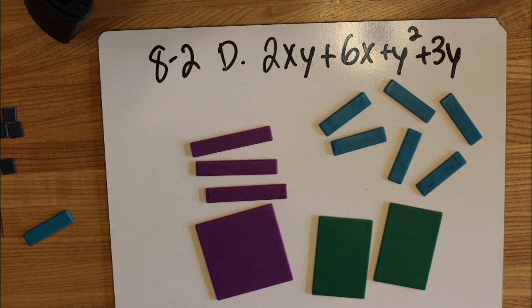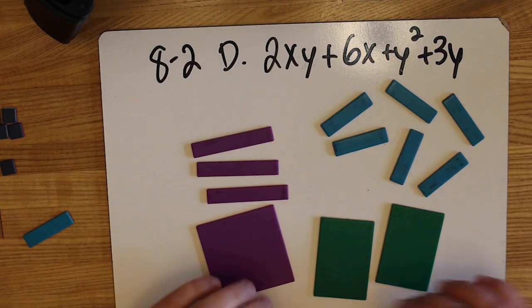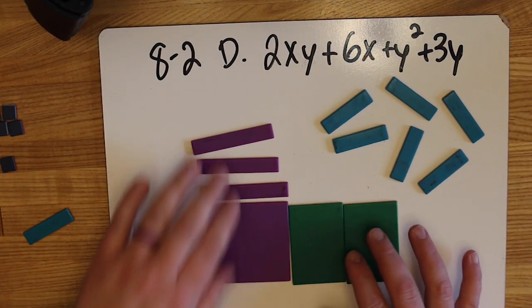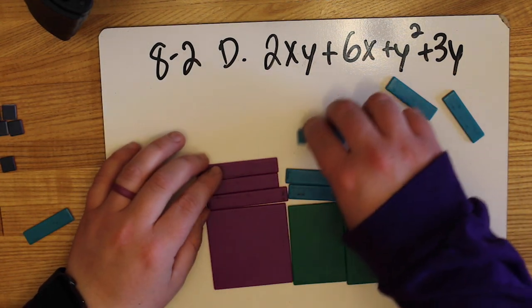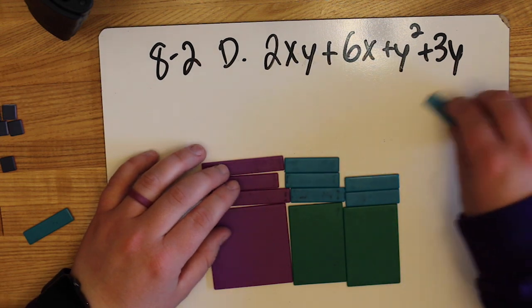Part D is 2xy plus 6x plus y squared plus 3y. Again, we're going to make these algebra tiles into a rectangle. Then we're going to write the product, which is the perimeter of the rectangle.